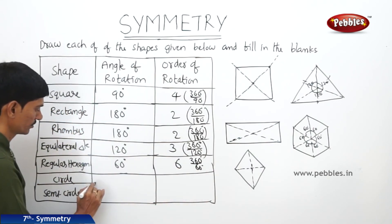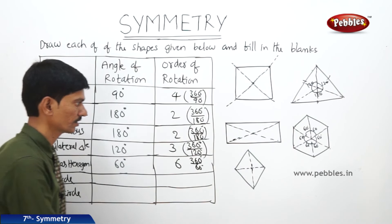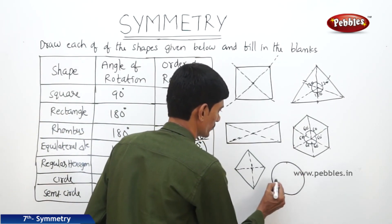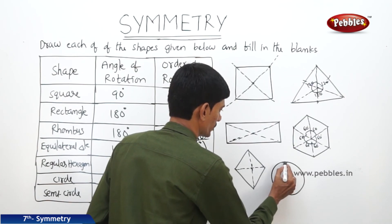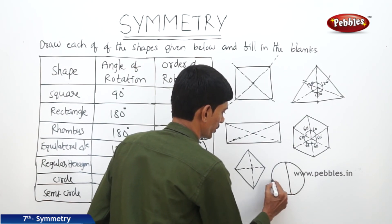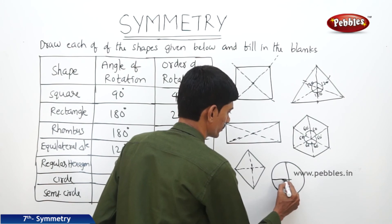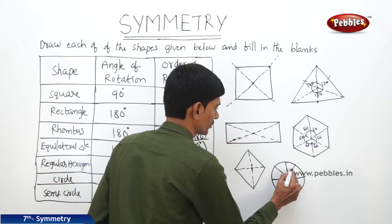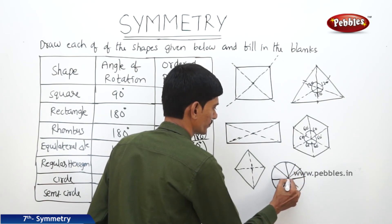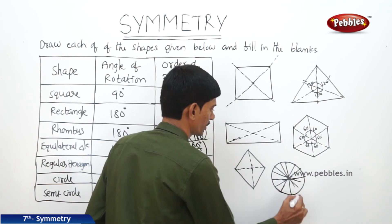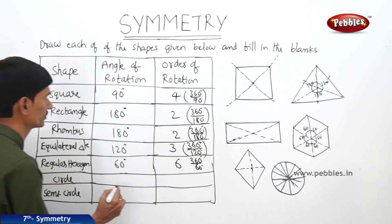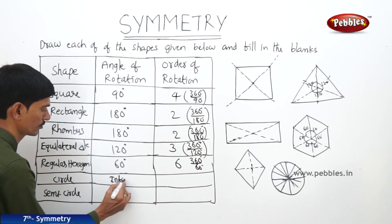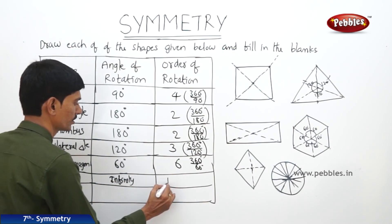Now in case of a circle, if you draw the point of intersection of any two diameters, it has infinite number of orders. So we can write infinity in both cases — the angle of rotation is infinity, and the order of rotation is also infinity.